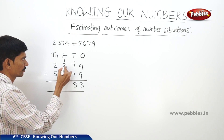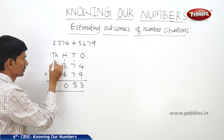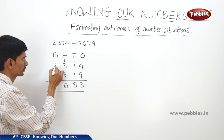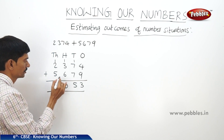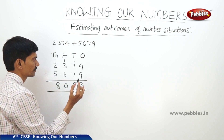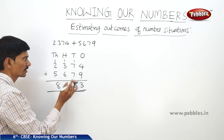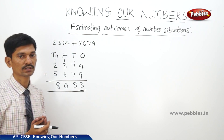1 plus 7 is 8, plus 7 is 15, carry 1 to the 100s place. Then 1 plus 3 is 4, plus 6 is 10, carry 1. Then 1 plus 2 is 3, plus 5 is 8. So the sum of 2374 and 5679 is 8053. Now if you want to estimate the sum of 2 or more numbers: